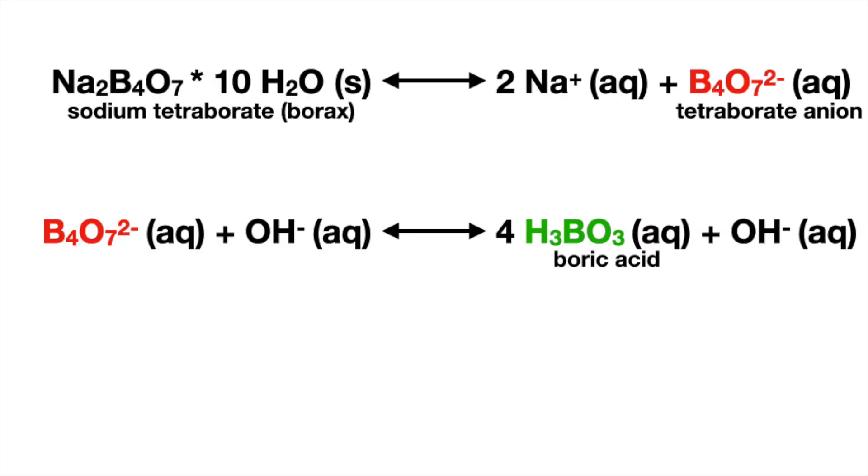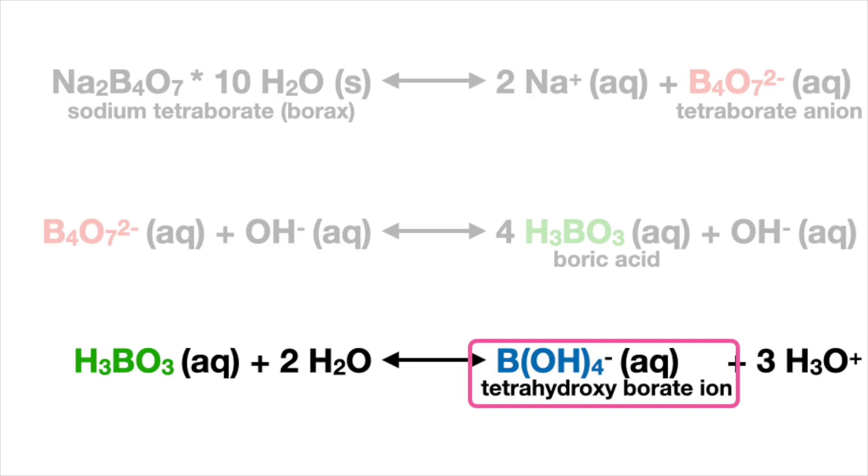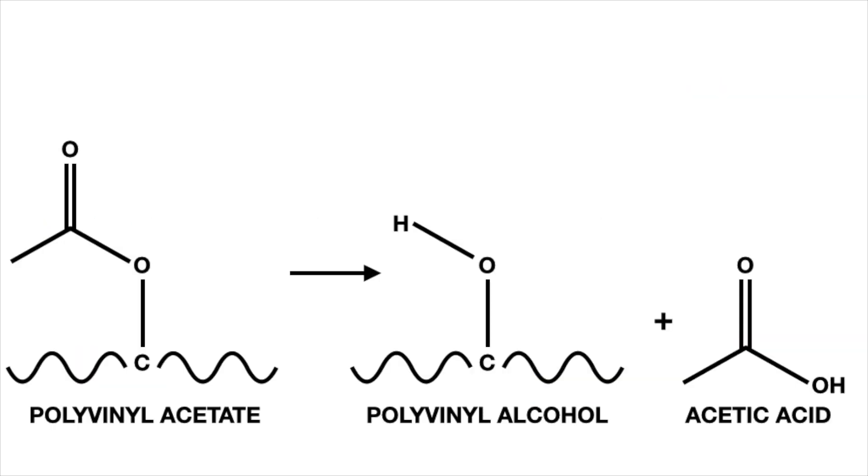Borax, which is sodium tetraborate, hydrolyzes in water to form boric acid and hydroxide ions, making the water solution more alkaline. The boric acid reacts with water to form borate ions. The polyvinyl acetate, which is in our clear glue, in the alkaline solution loses the acetic acid and forms polyvinyl alcohol.